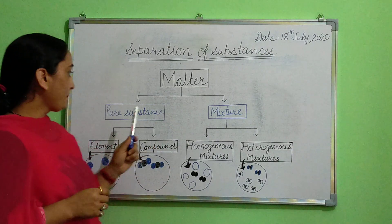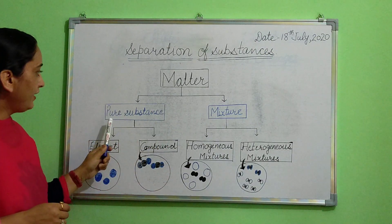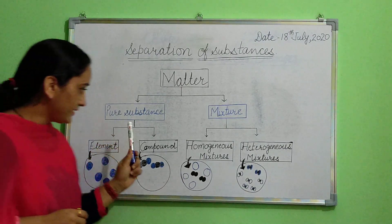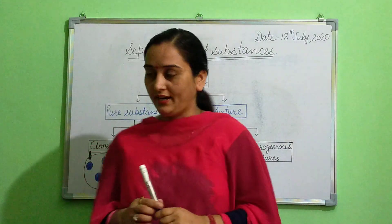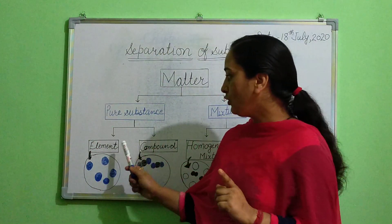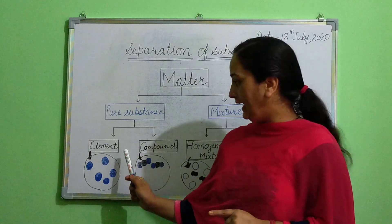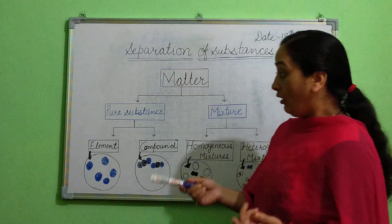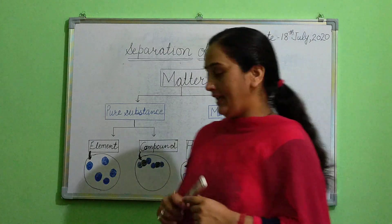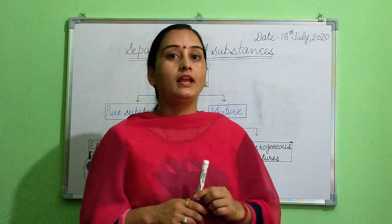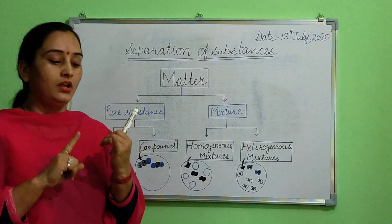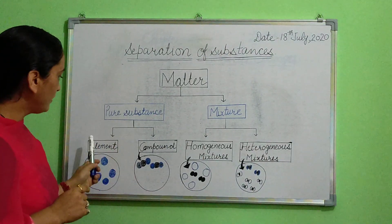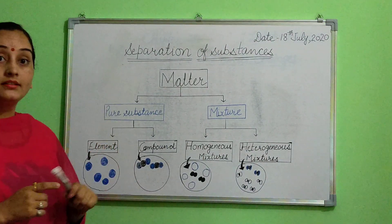Further, what are the different types of pure substances? Pure substances can be classified into two types: first is element and second is compound. What is an element? Elements include, for example, hydrogen, helium, carbon, and nitrogen.